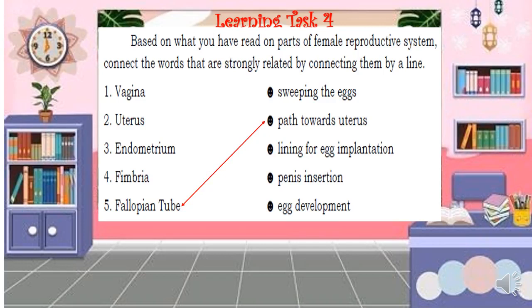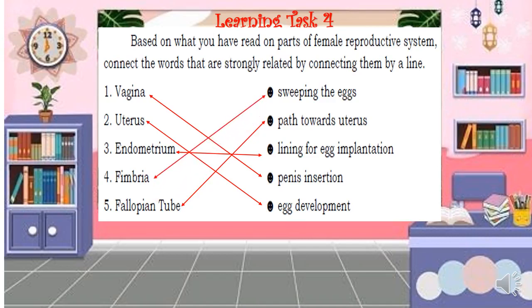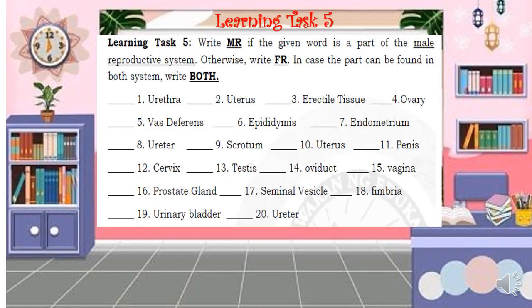Next, connect the words that are strongly related by drawing a line. The fallopian tube is related to the path towards the uterus. Vagina is related to penis insertion. Uterus is related to egg development. Endometrium is related to egg implantation. Fimbria is related to sweeping the eggs.